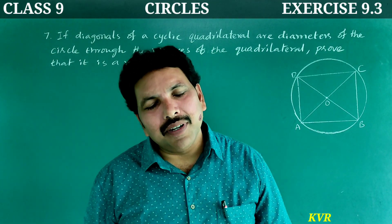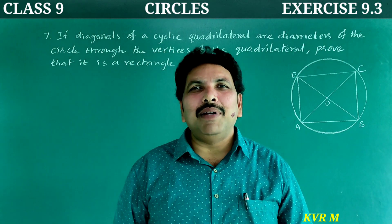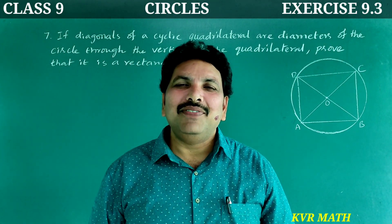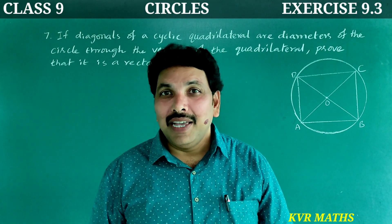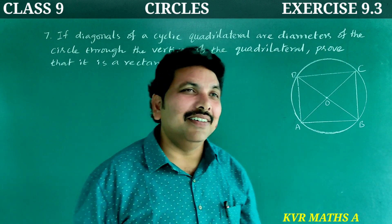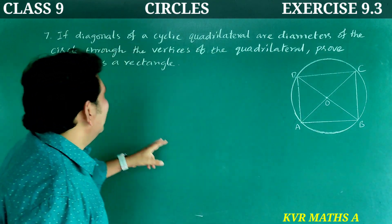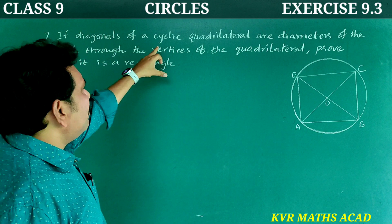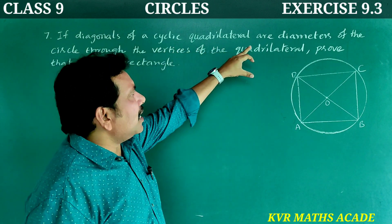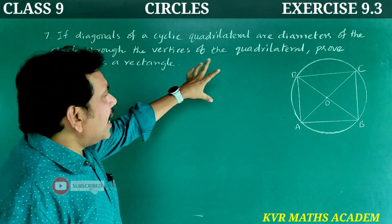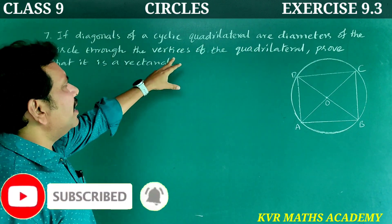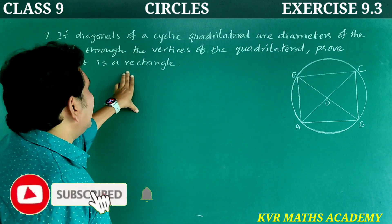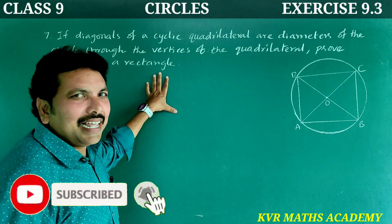Before doing these problems, viewers, please subscribe to my YouTube channel if you have not subscribed yet. Seventh question: If diagonals of a cyclic quadrilateral are diameters of the circle through the vertices of the quadrilateral, prove that it is a rectangle.